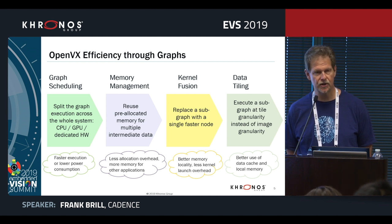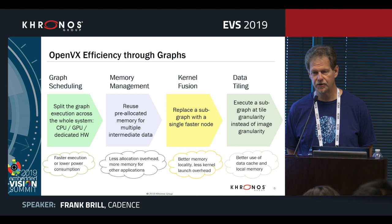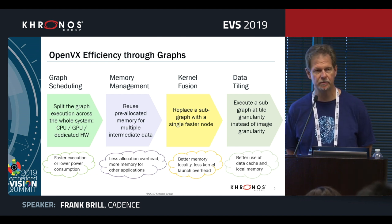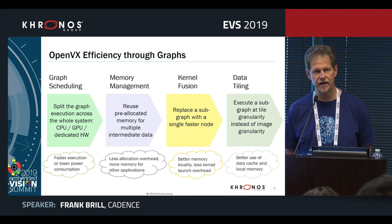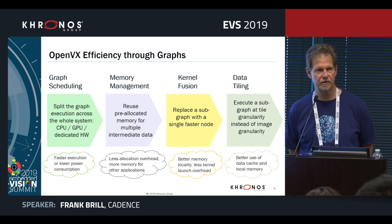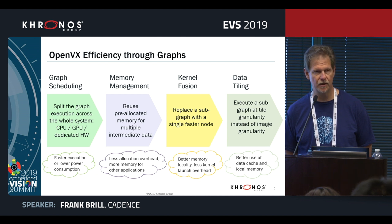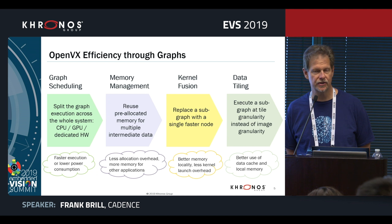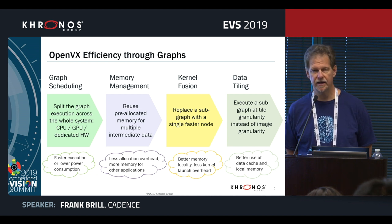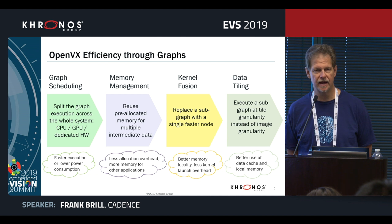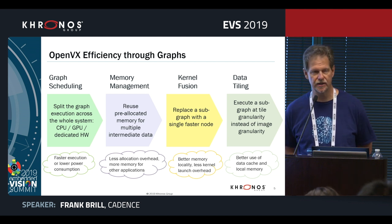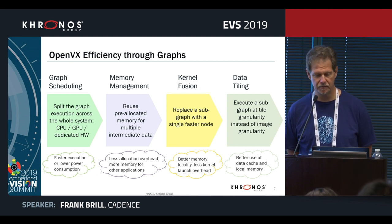Another benefit is automatic memory management. If you do individual kernel calls, you may end up allocating and deallocating a lot. With OpenVX, the runtime knows everything it needs throughout the computation and can optimize and reuse memory automatically. Additionally, kernel fusion allows a commonly used group of kernels in a graph to be replaced with a single optimized kernel, saving computation and memory bandwidth.